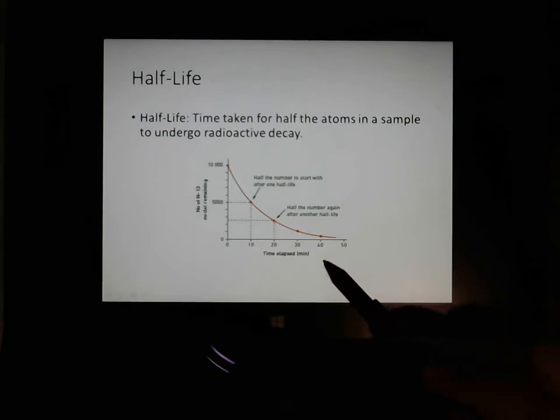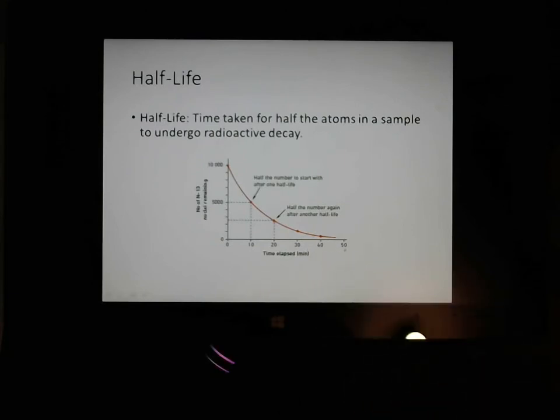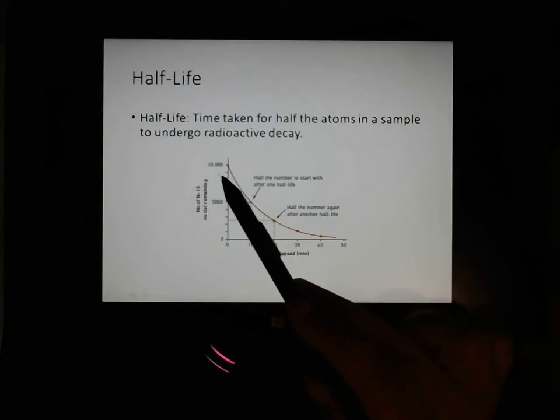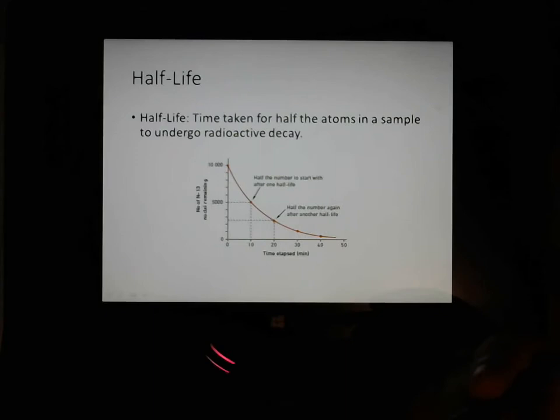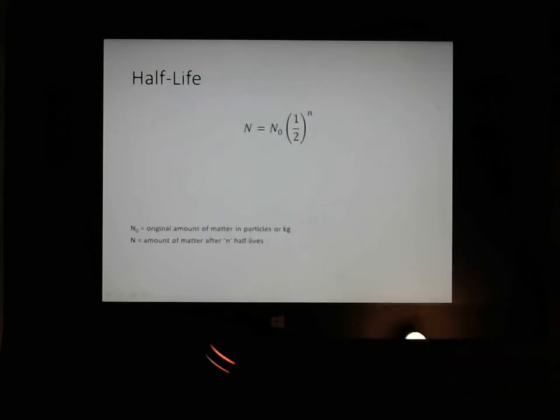By convention, we would say it takes about 10 half-lives to become all expended or finished. So in this case, this would be expended after about 100 minutes. And it wouldn't matter what our original value was. If we started it with 1 billion atoms, it would be half a billion, and then a quarter of a billion. But as you go down through 10 half-lives, it's going to hit a very, very low number pretty quickly.